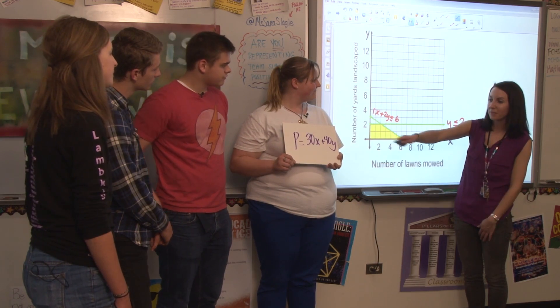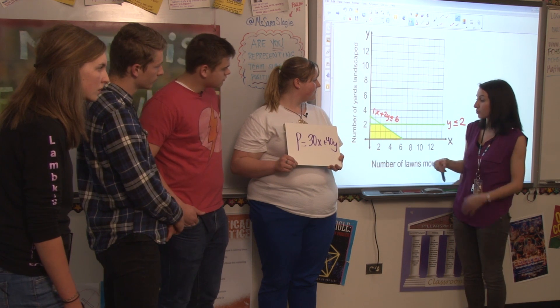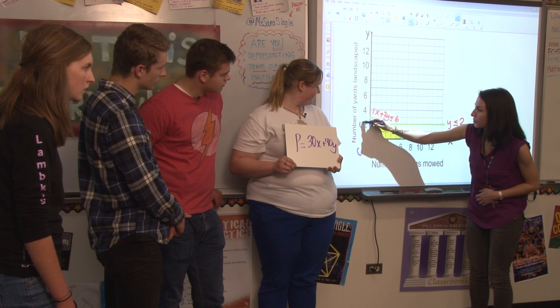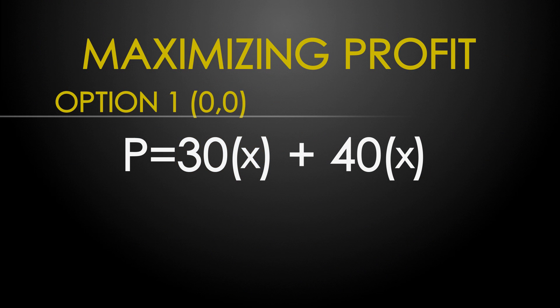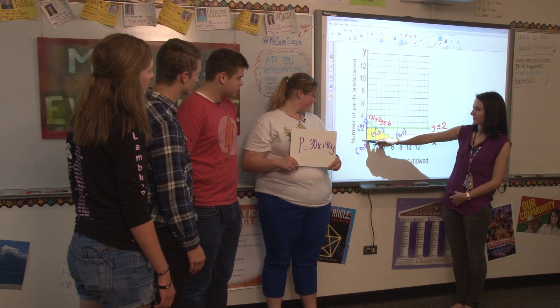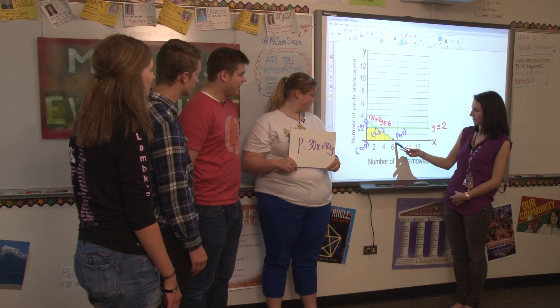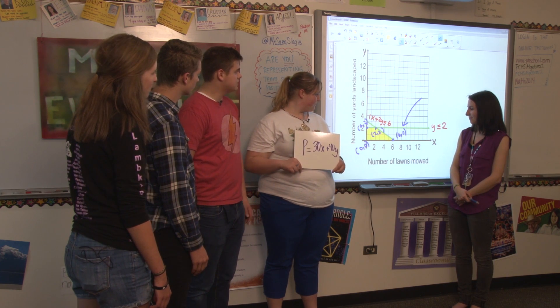Does that help? It sure does! Since your profit equation is linear, it means that the coordinate that maximizes your profit is going to be on one of the vertices of your feasible region. So this narrows your choices down to (0,0), (0,2), (2,2), and (6,0). So now we can plug each of these four coordinates into the objective profit function to see which one makes you guys the most money. It looks like we have $0, $80, $140, and $180. So that means that the maximum profit we can make will be when we mow six lawns and do zero landscaped yards, giving us a maximum profit of $180 each day.